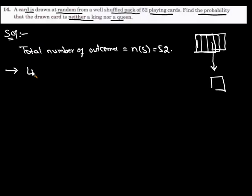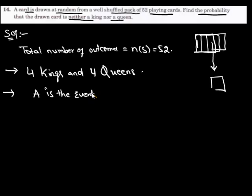Thus, if we take A is the event which denotes the card is king, then the number of possible outcomes to the event A are 4.